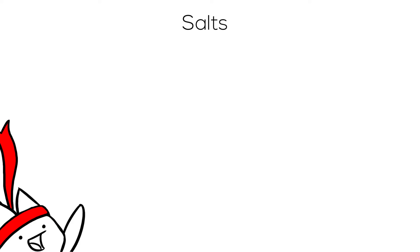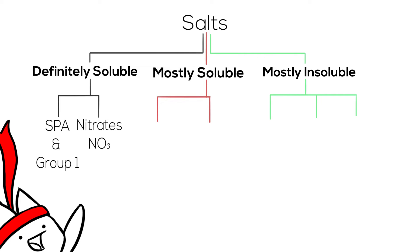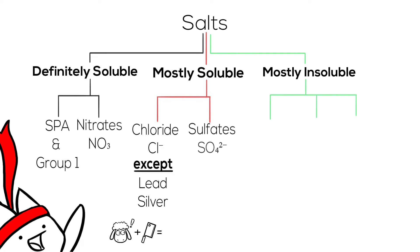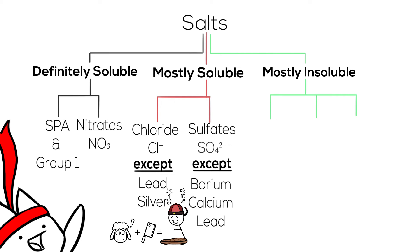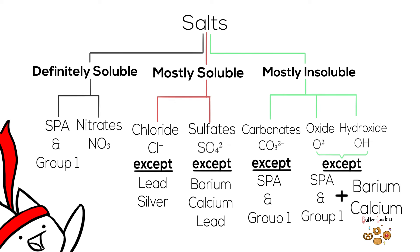In summary, all salts are categorized into three groups: definitely soluble, mostly soluble, and mostly insoluble. First category — definitely soluble salts — includes salts with SPAR, Group 1, and nitrates. Second category — mostly soluble salts — are chlorides and sulfates. All chlorides are soluble except lead and silver. All sulfates are soluble except barium, calcium, and lead. Third category — mostly insoluble salts — are carbonates, oxides, and hydroxides. All carbonates are insoluble except SPAR and Group 1. All oxides and hydroxides are insoluble except SPAR, Group 1, barium, and calcium. And that's how we determine the solubility of salts.